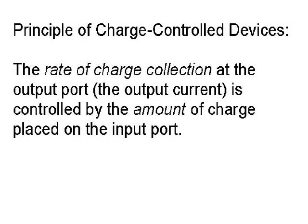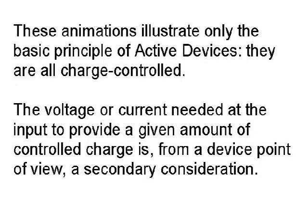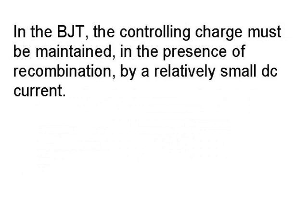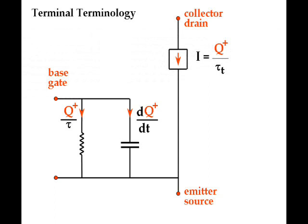The important point about the second-order recombination process is that it contributes only a small DC component of base current and has no effect on the relatively large transient base currents required to turn the collector current on or off. These animations illustrate only the basic principle of active devices — they are all charge controlled. The voltage or current needed at the input to provide a given amount of controlled charge is, from a device point of view, a secondary consideration. The presence of an input capacitance is inherent in the device. To make the device operate fast, the controlling charge must be supplied or withdrawn fast, requiring a large transient drive current — the same for the FET and the BJT. In the BJT, the controlling charge must be maintained in the presence of recombination by a relatively small DC current.